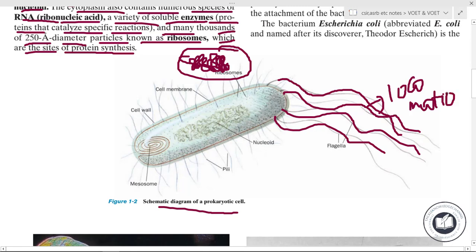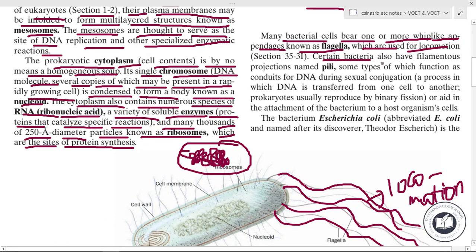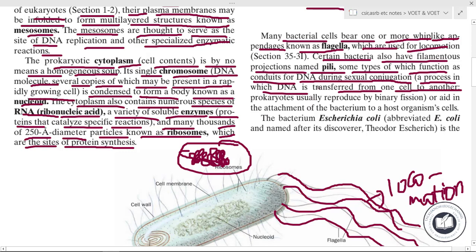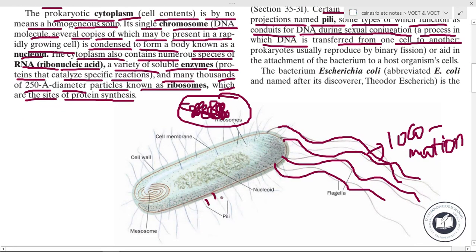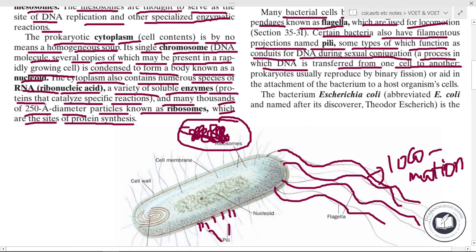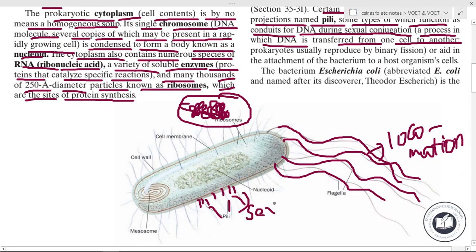Certain bacteria also have filamentous projections named pili. Some types of pili function as conduits for DNA during sexual conjugation — a process in which DNA is transferred from one cell to another. The pili help facilitate this process of contact between cells during sexual conjugation.